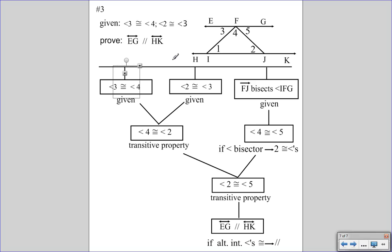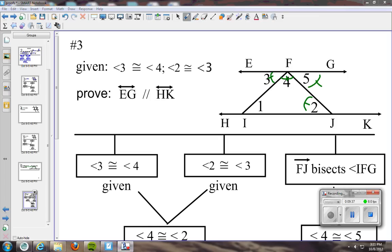Looking at the written proof: we know 3 and 4 are congruent — that's a given. Angle 2 is congruent to angle 3 — also a given. That means angle 4 is congruent to angle 2 by the transitive property. If FJ is the bisector of angle IFG, then angle 4 and angle 5 have to be congruent by the definition of bisector. Now if 4 is congruent to 2 and 4 is congruent to 5, then angle 2 and angle 5 have to be congruent by the transitive property. And if angle 2 is congruent to angle 5, then line EG is parallel to line HK, because if alternate interior angles are congruent, then the lines are parallel. Make sure you try those proofs and see how you do. Thank you for watching.